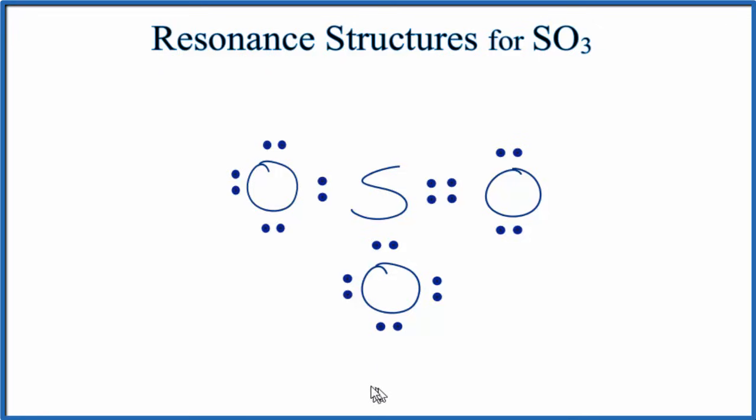If you do a Lewis structure for SO3, you'd come up with something like this. Pretty good Lewis structure. You've used all of the valence electrons and each atom has an octet. So this is a valid Lewis structure.